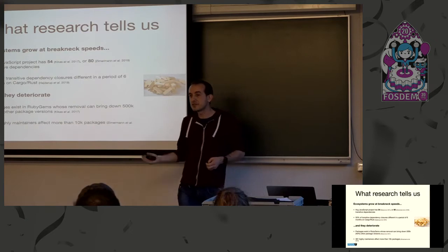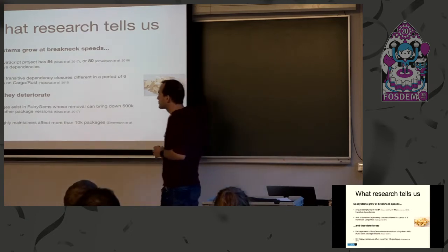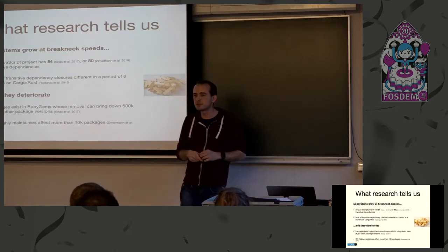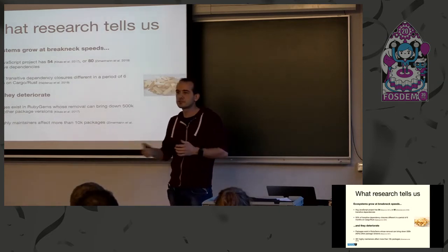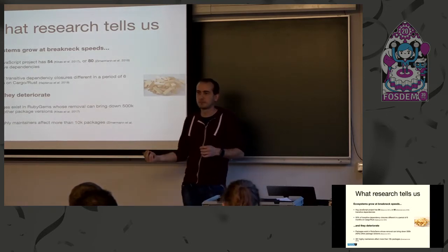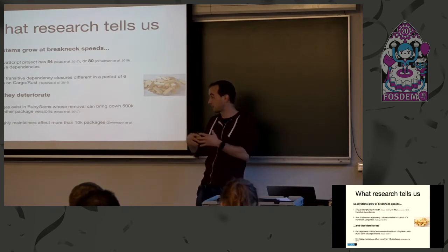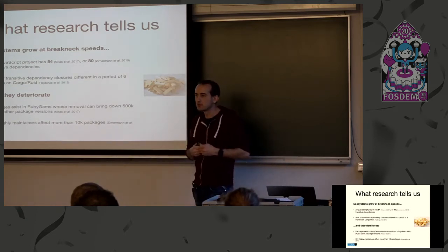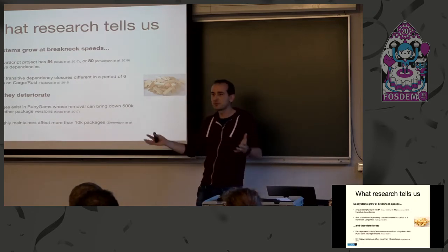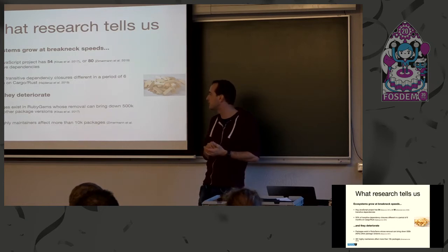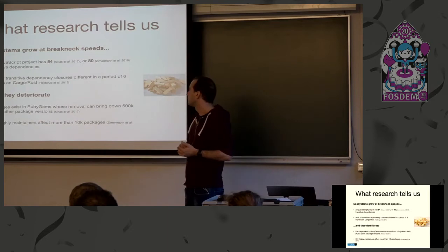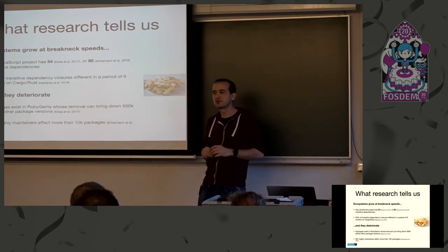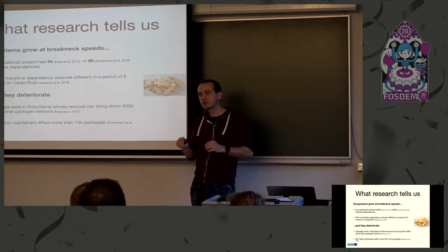These ecosystems change at a very high rate. In our research we found that from the transitive dependency closure — all dependencies obtained by doing a package resolution — 50% of those change over the course of six months, because new package versions are released. So our transitive dependency closure changes even though we don't change our own client code. It's very important to understand what's going on in the periphery of our dependencies, not just in our immediate dependencies. We also found that there exist packages in ecosystems like RubyGems that, if removed, would cause around 40% of the ecosystem to collapse.